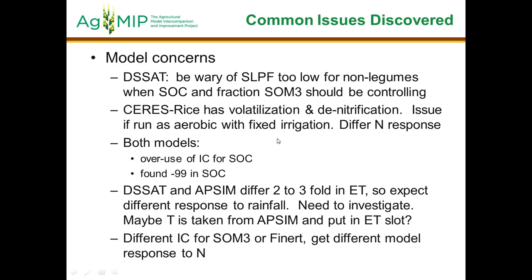We also saw issues with rice modeling, both EPSIM and DSAT. The series rice model has volatilization if ammonium or urea fertilizers are applied and not incorporated — you can specify the percent volatilized depending on application method. It also does denitrification, which can cause very different nitrogen responses. It may be running somewhat as aerobic or alternate wetting and drying. We found a case where initial condition soil carbon had minus 99s in some slots, which is not acceptable.